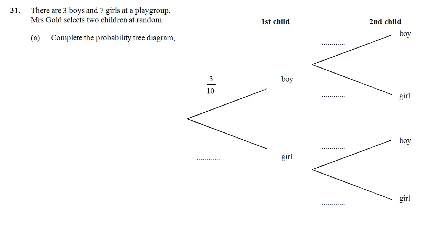Question 31 is a little bit different. Three boys and seven girls and Mrs. Gold is selecting two children at random. To get two children you have to not put the first one back after you've chosen it. So this is sampling without replacement. That means that once you've picked one, the system changes, there's one fewer person, so the probabilities change. The first one you pick, well there's three boys, seven girls, so that's three tenths and seven tenths.